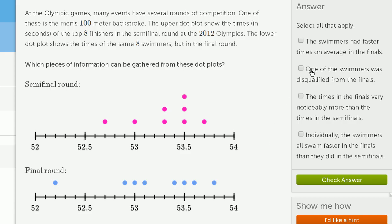So let's look at the statements and see which of these apply. The swimmers had faster times on average in the finals. So if we look at the finals right over here, we could take each of these times, add them up, and then divide by eight the number of times we have. But let's see if we can get an intuition for where this is, because we're really just comparing these two plots or these two distributions.